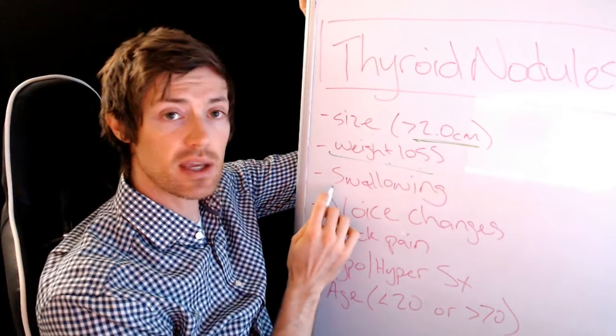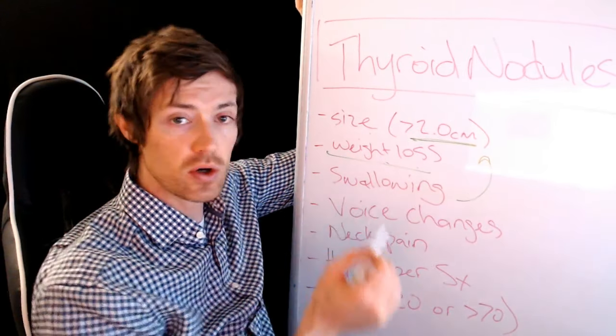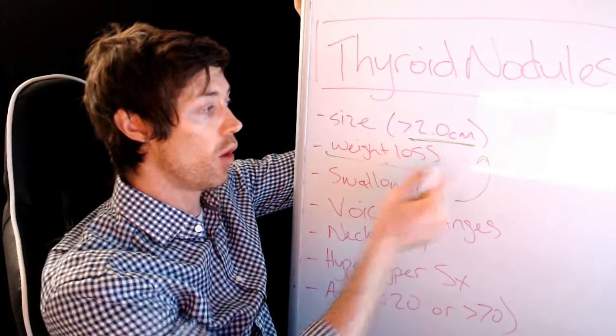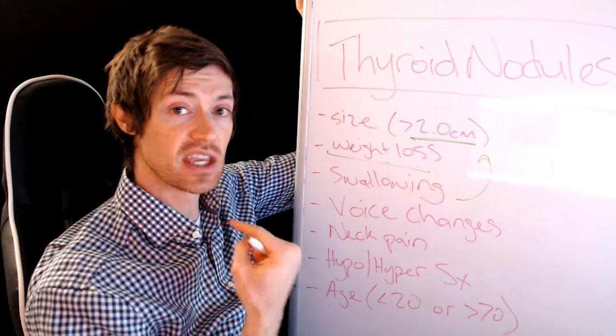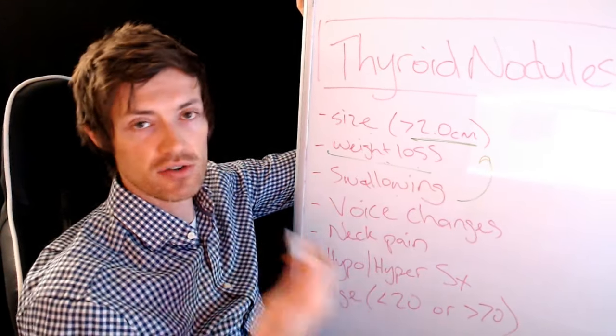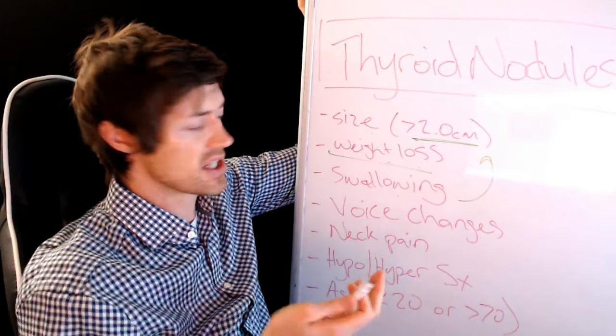Now swallowing can be an issue too. So this kind of goes back up to the first one we talked about with size. But if you're having difficulty with swallowing, that's usually an indication there's a problem. Now you don't always see nodules that are big because they can be in the back of your thyroid. And in that case, they can press upon your esophagus, which can cause the problems with swallowing. But if all of a sudden you're developing some issues with swallowing when you've otherwise been healthy, that's a little bit of a warning sign.